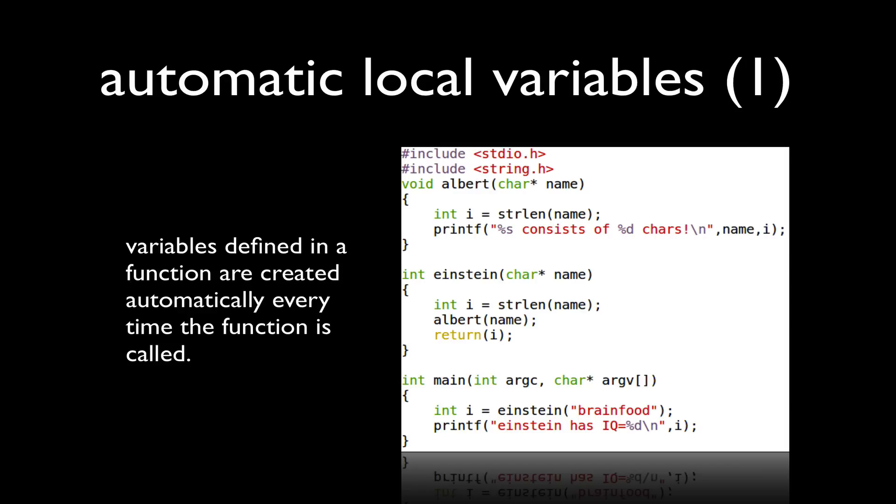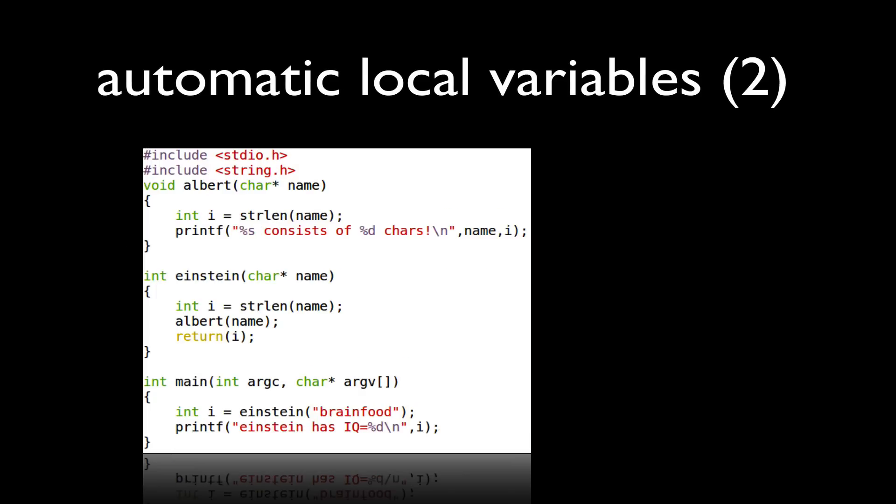So in this particular example, you'll see that I have a function Einstein and a function Albert, and both of these define local variables i. And they're all different, and they're all scoped within the invocation of that particular function.